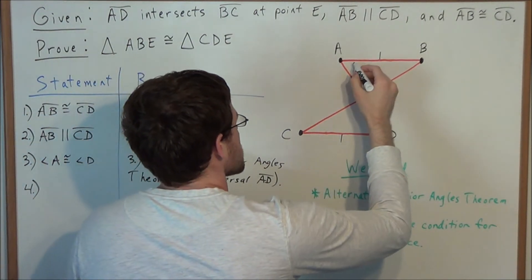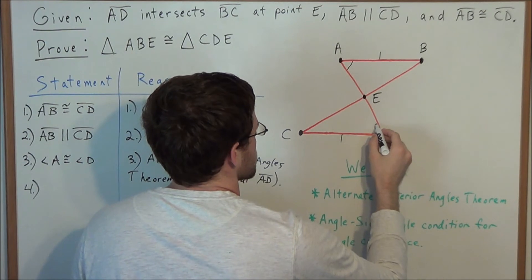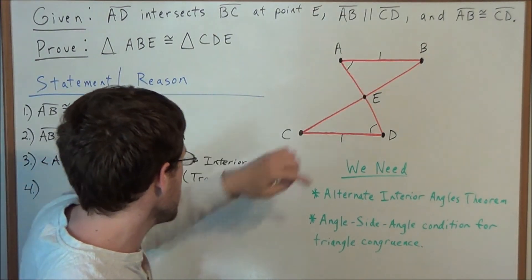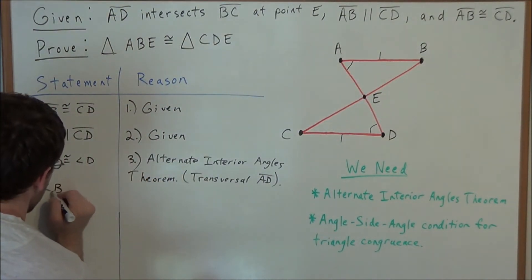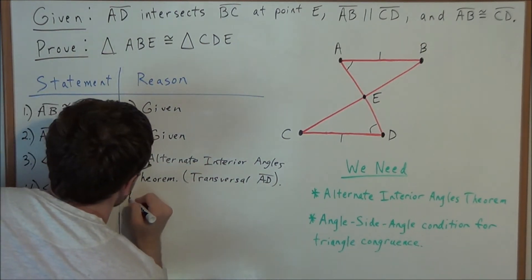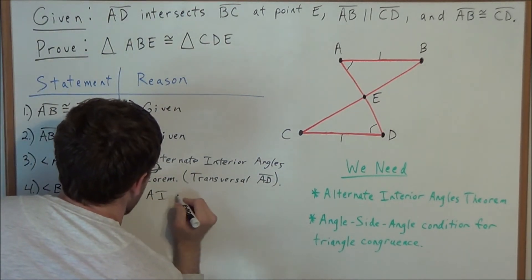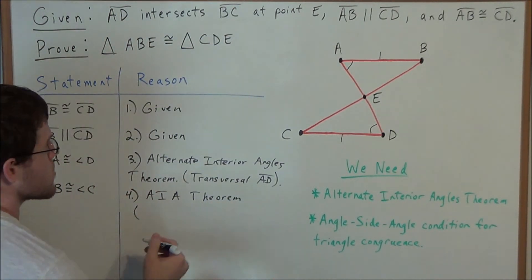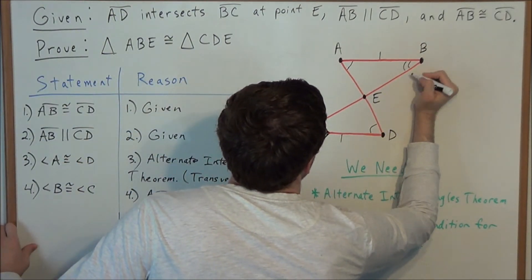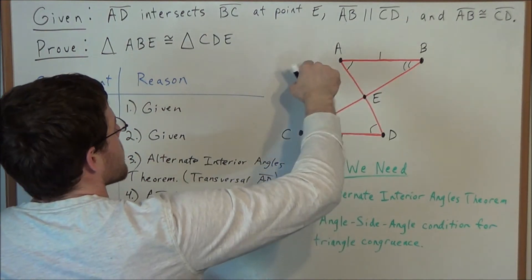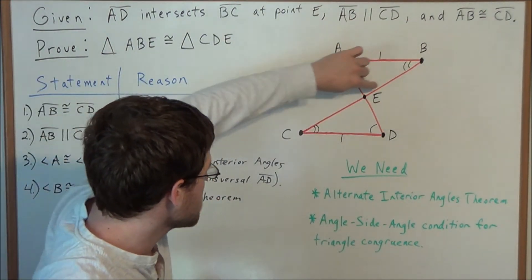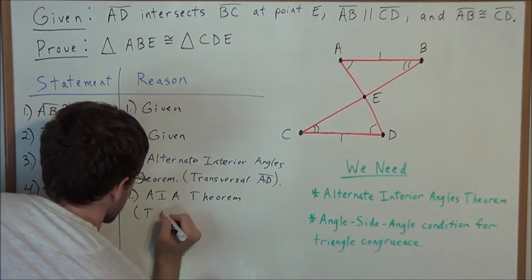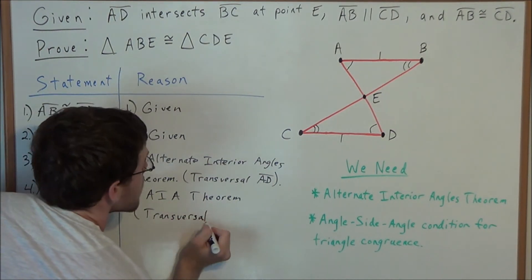We could use the Alternate Interior Angles Theorem again, except now we're going to target angle B and angle C. So we could say that angle B is congruent to angle C, and the reason is once again the Alternate Interior Angles Theorem. This time the transversal is line BC. Parallel lines AB and CD, when cut by transversal BC, form alternate interior angles B and C.